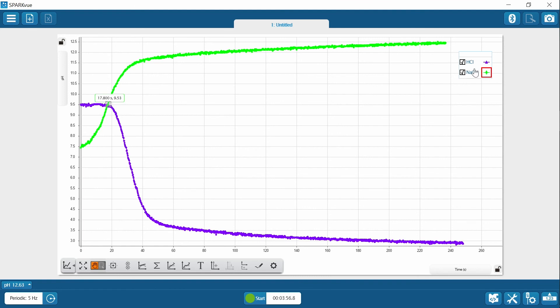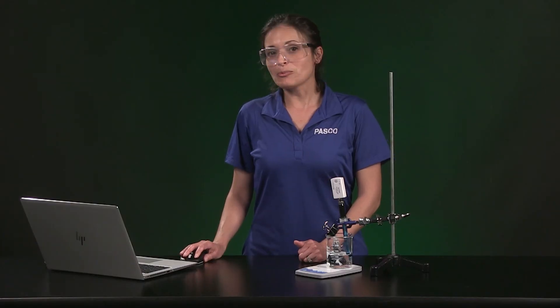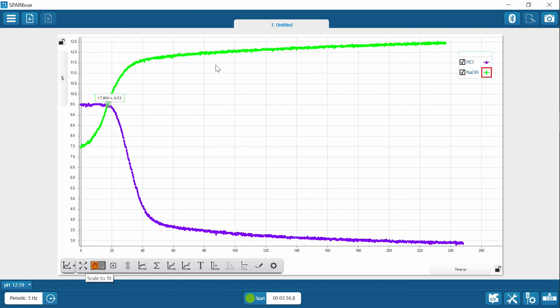To view both runs at the same time at full scale, make sure both runs are checked in the legend. Then hit the scale button. You should be viewing both runs fully scaled when you complete Graph 1 as directed in the instructions.